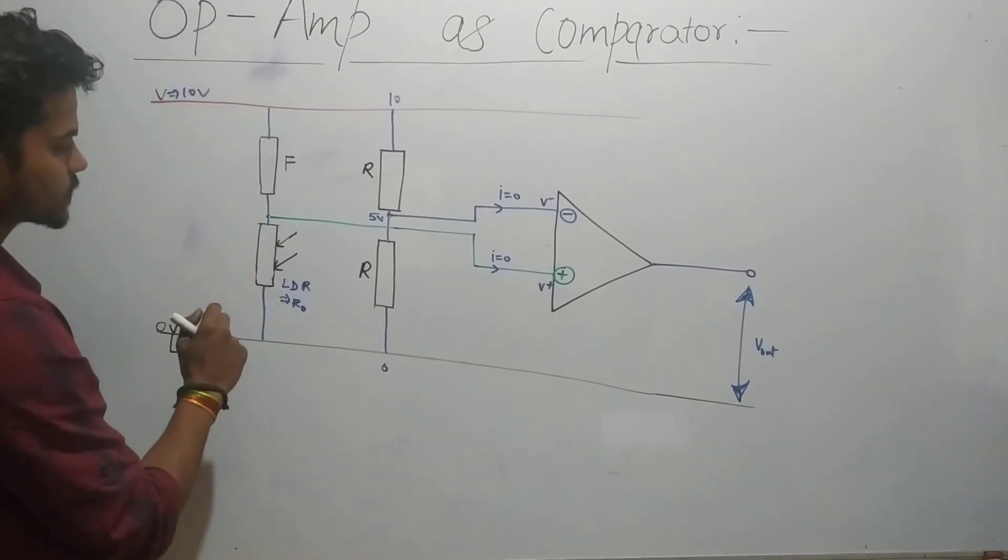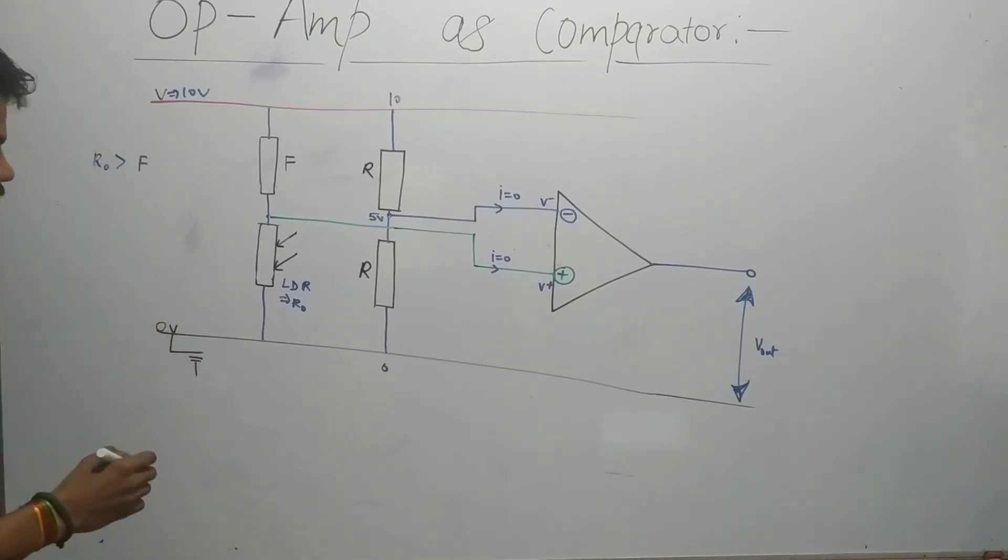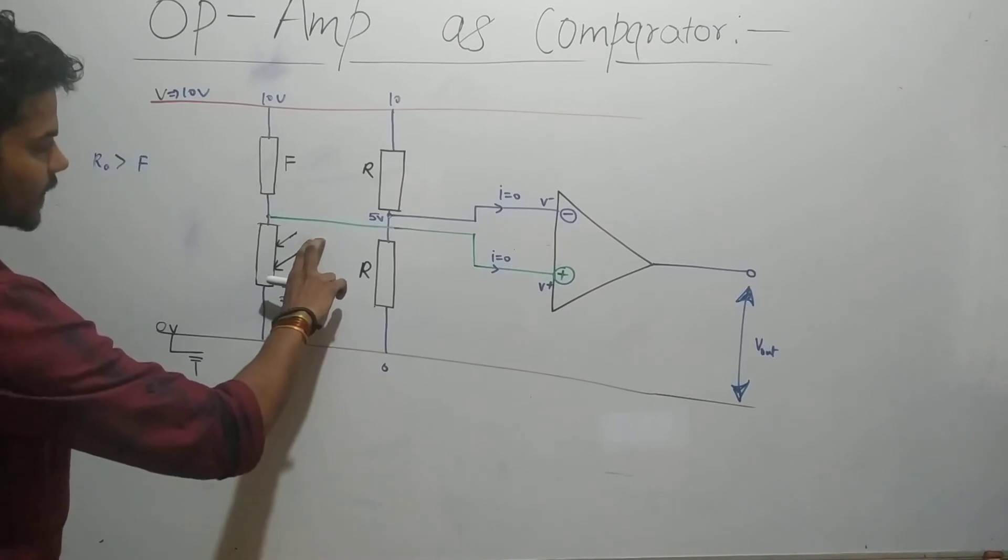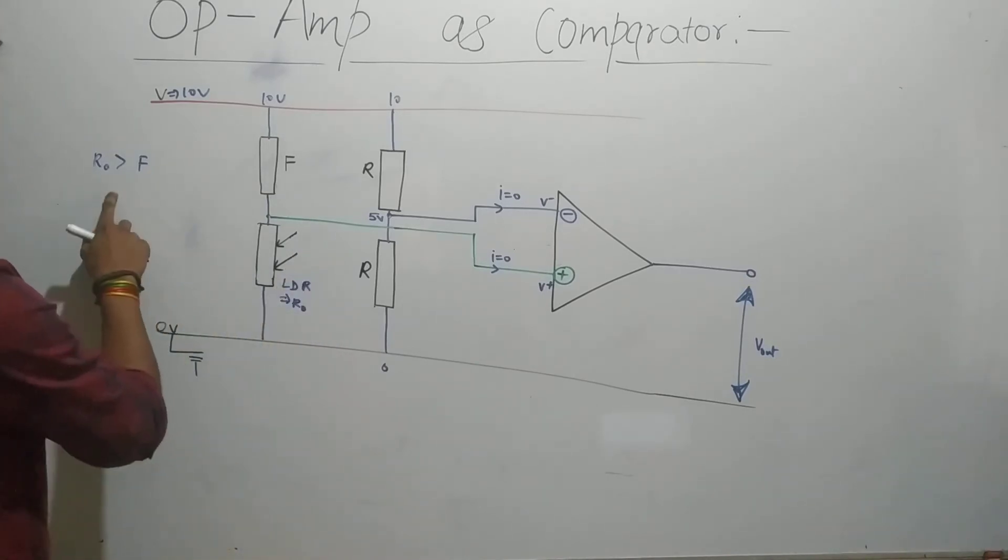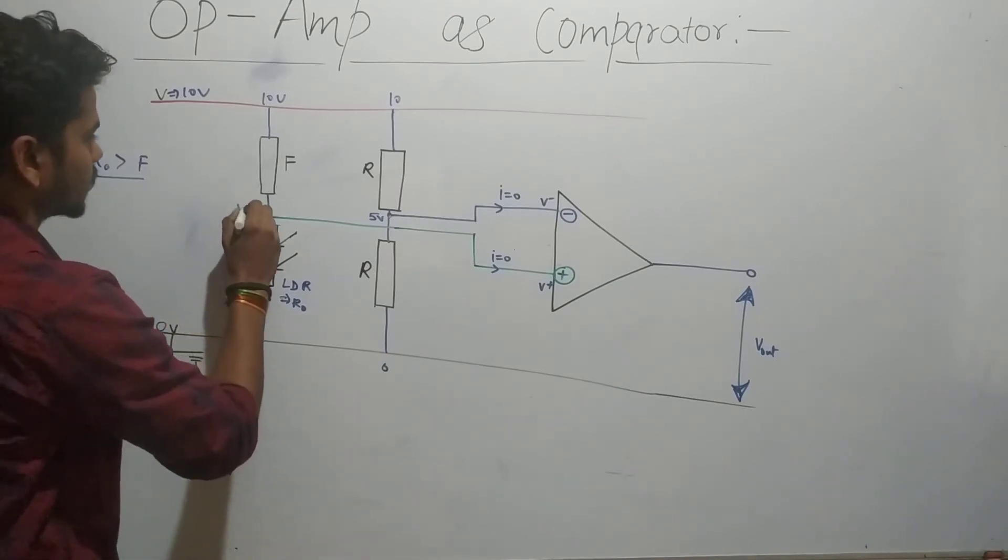First, let's say R_naught is greater than R_F. If we have 10 volts here, most of it will be consumed by R_naught. As you know, if there is darkness in a given LDR system, then your resistance is high. If light falling on it is low, then resistance will be high. So R_naught will be greater than R_F, and the voltage at this point will be greater than 5.